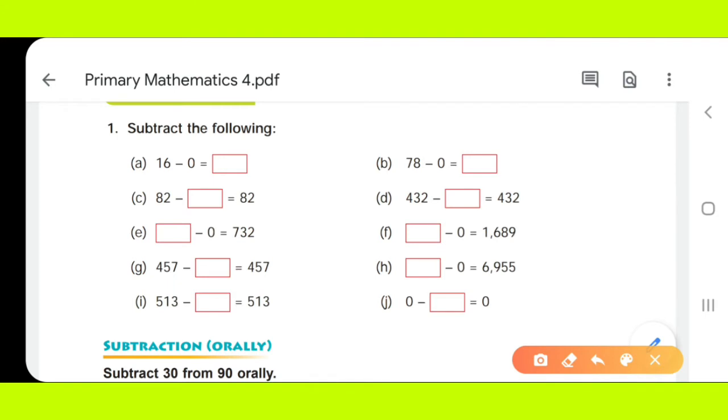In this first question, subtract the following a part, 16 minus 0. As we have already studied this property that if we subtract 0 from any number, we get the same number. So, when we subtract 0 from 16, the answer will be 16.